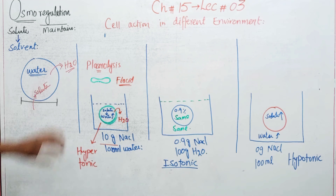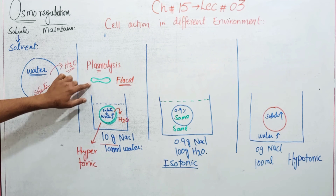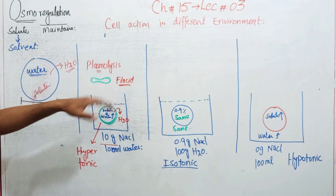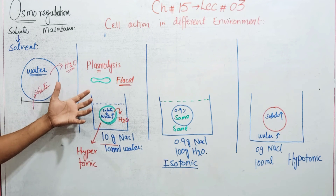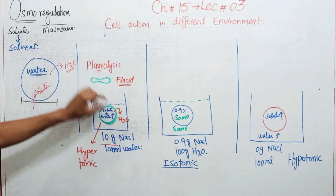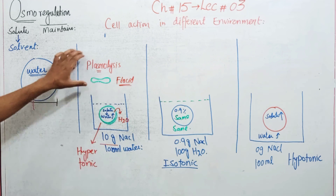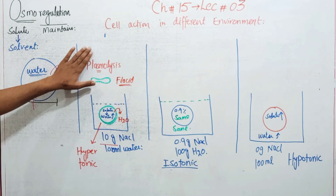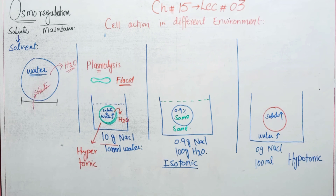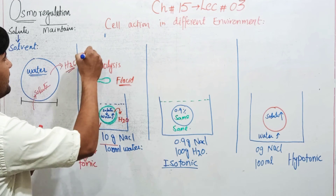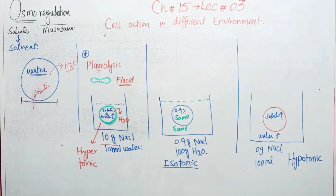Plasmolysis کیا چیز ہوتی ہے؟ Plasma کا مطلب ہے cytoplasm اور lysis کا مطلب ہے ٹوٹ جانا - یعنی کہ جو plasma تھا اس میں جو water تھا وہ سارے کا سارا نکل گیا، تو cell جس شکل میں آیا اس کو flaccid بولتے ہیں۔ یہ particular process plasmolysis کہلاتا ہے۔ یہ ایک انتہائی important short question ہے - what is plasmolysis and deplasmolysis؟